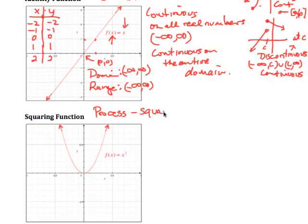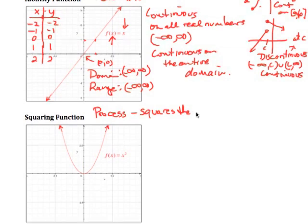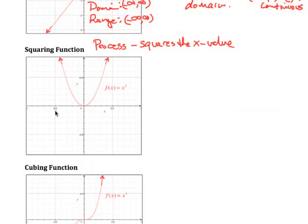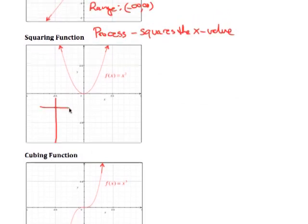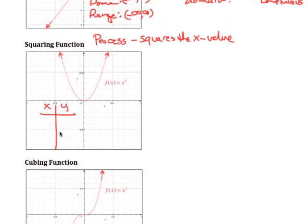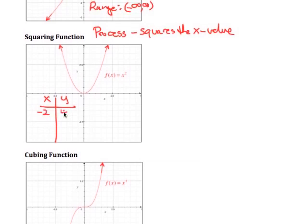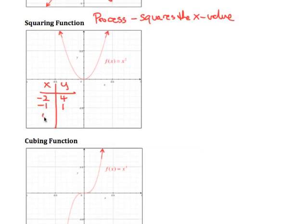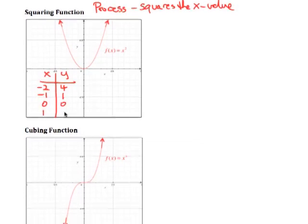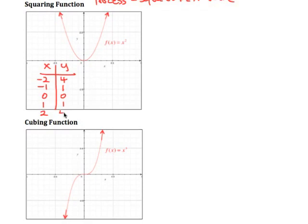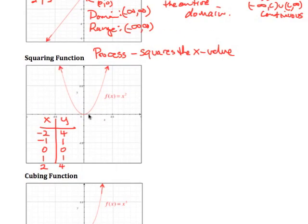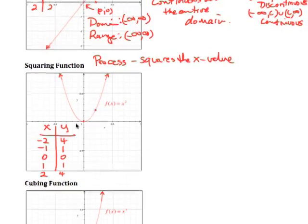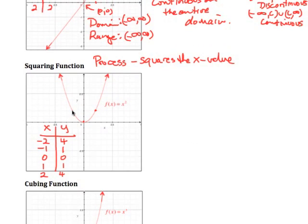The next one is called the squaring function. The process the function does is it squares the x value. Looking at a table of values: negative 2 squared gives 4; negative 1 squared gives 1; 0 squared is 0; 1 squared is 1; and 2 squared is 4.